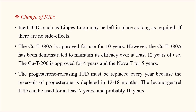Regarding how frequently IUDs should be changed: inert IUDs such as the Lippes Loop may be left in place as long as required if there are no side effects. Copper T380A, a second generation device, is approved for 10 years, though demonstrated efficacy over 12 years. Copper T200 is approved for four years, and Novagard for five years. Progesterone-releasing IUDs must be replaced every year because the reservoir is depleted in 12 to 18 months. The levonorgestrel IUD, LNG20, is used for at least seven to ten years.